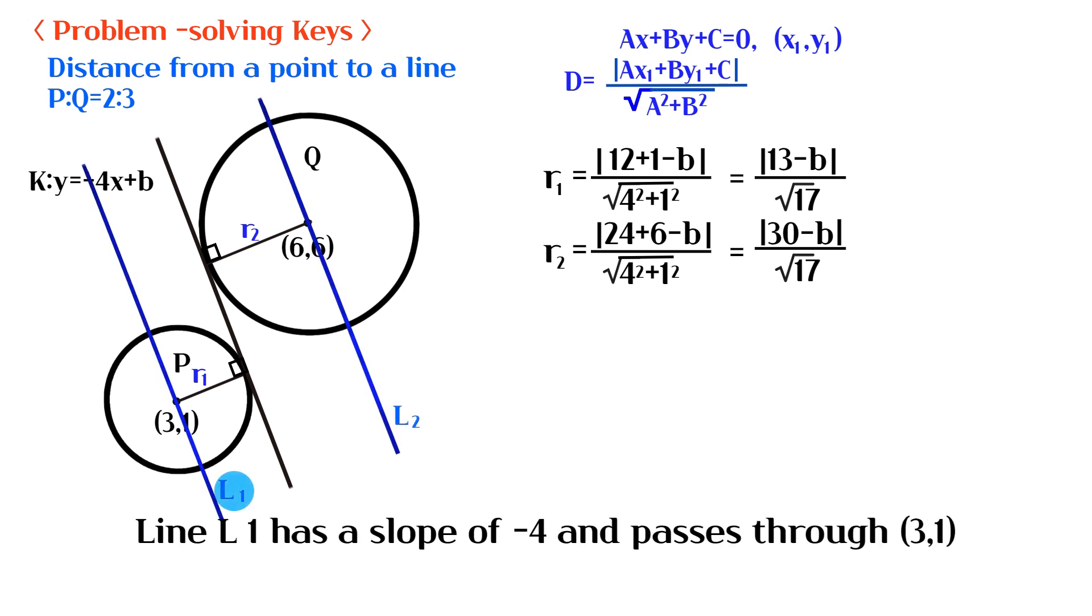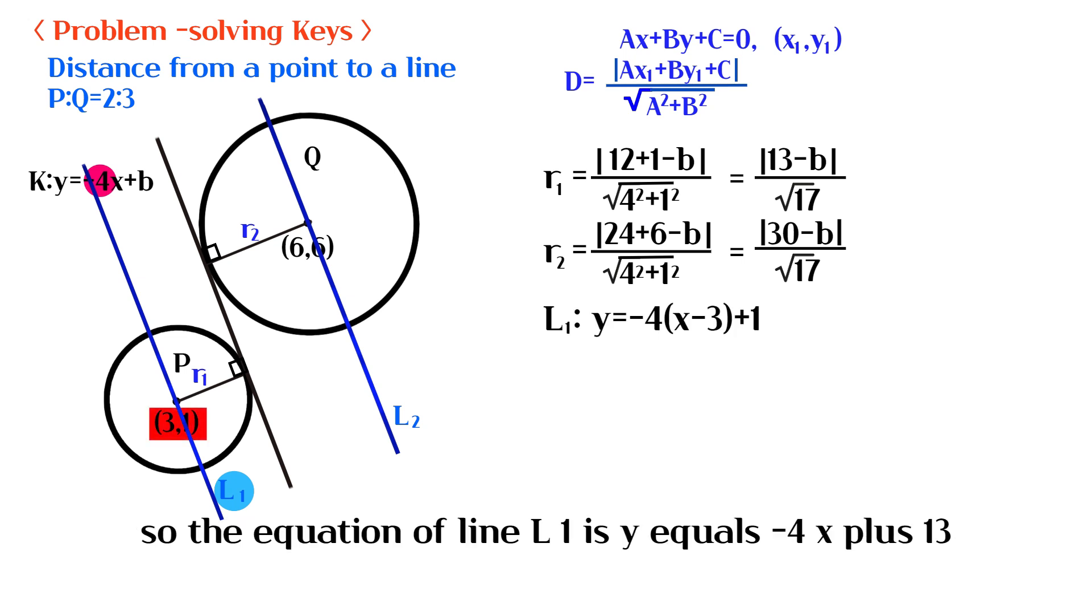Line L1 has a slope of negative 4 and passes through (3,1). So the equation of line L1 is y equals negative 4x plus 13.